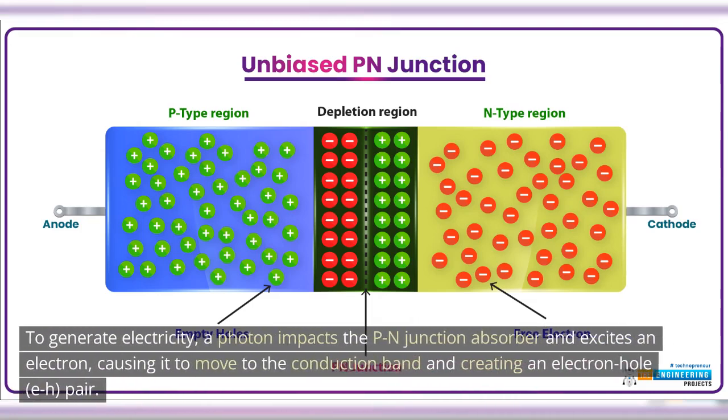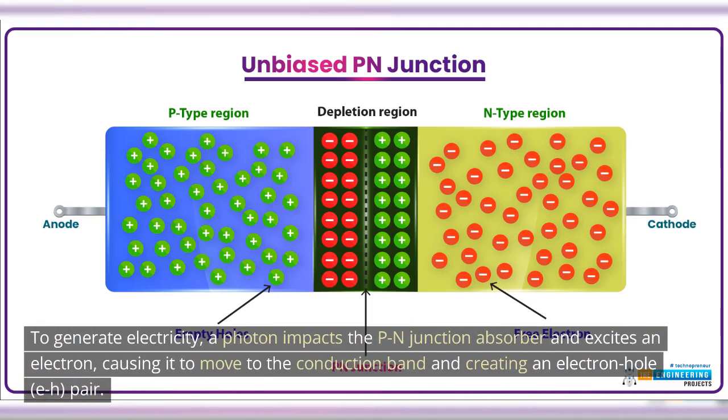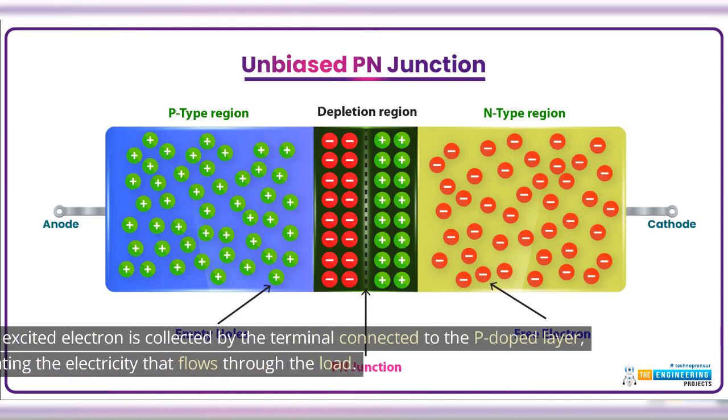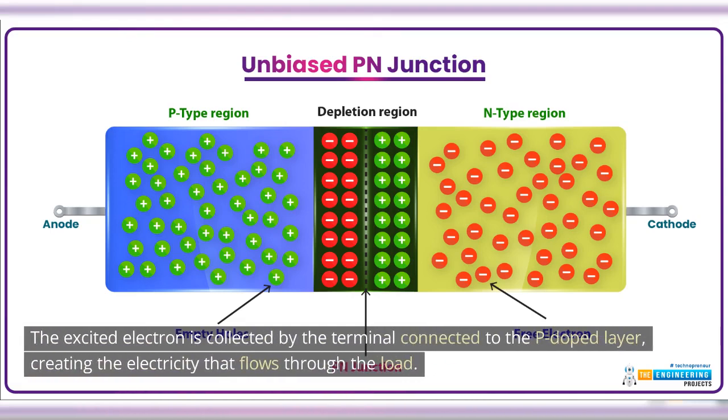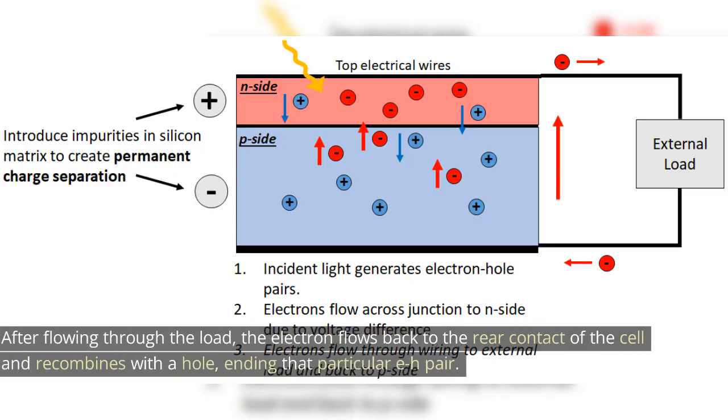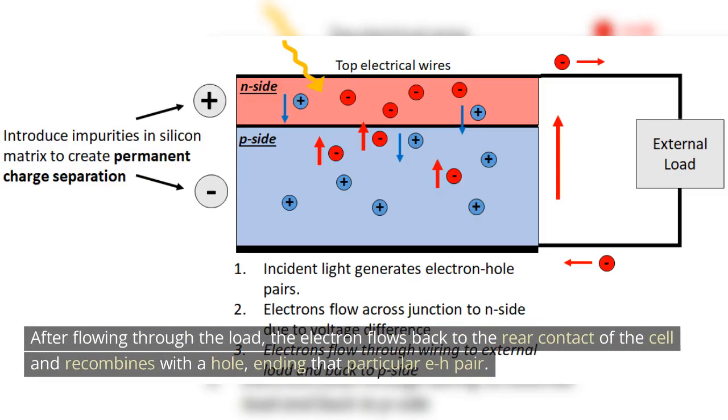To generate electricity, a photon impacts the PN junction absorber and excites an electron, causing it to move to the conduction band and creating an electron-hole EH pair. The excited electron is collected by the terminal connected to the p-doped layer, creating the electricity that flows through the load. After flowing through the load, the electron flows back to the rear contact of the cell and recombines with a hole, ending that particular EH pair.